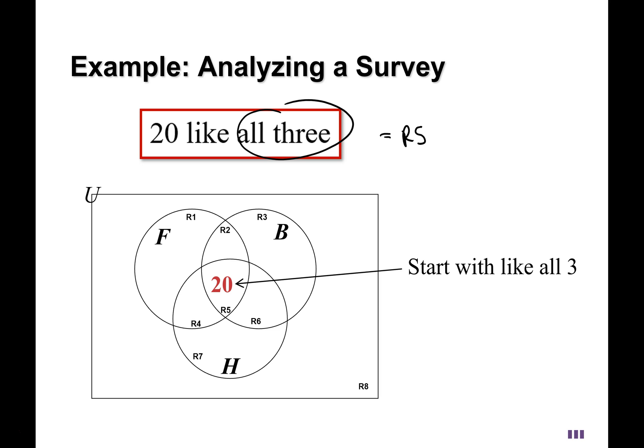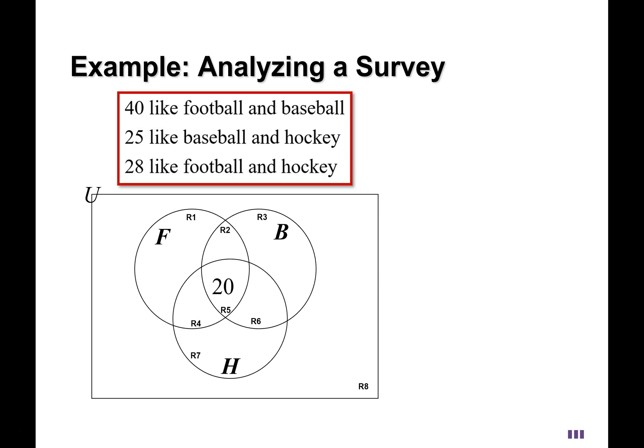Now let's move to the second group of three, where we know that some people like two sports at a time. So 40 like football and baseball, and 25 like baseball and hockey, and 28 like football and hockey. Now what we have to account for is which regions this information is about. So football and baseball - the 'and' hopefully tells you that it's the intersection at the same time. Which regions are inside of the football and baseball circles? Answer: region 2 and region 5. Not just region 2. Region 5 is in there as well.